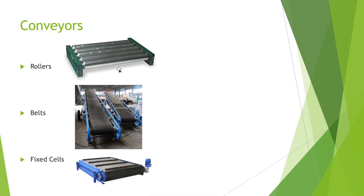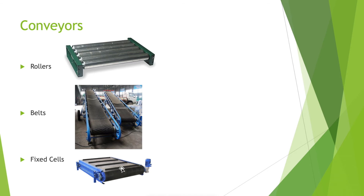For the conveyors, you have three types. The first is the rollers — this is the only conveyor that makes the movement of each item independent of the others, even though the conveyor can move at a constant speed. Then you have the belts, which are the typical ones you can see, for example, at the airport when you pick up your luggage — all the items move together. And finally, you have fixed cells, which is very similar to the belt, and you may even have a belt, but you have fixed spaces for each item.